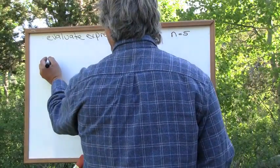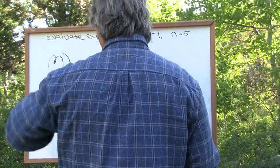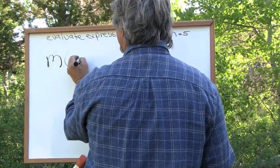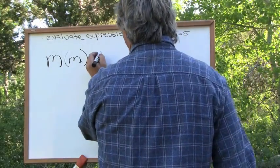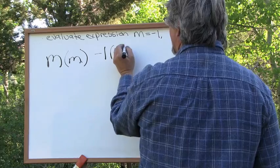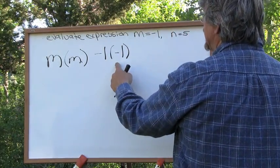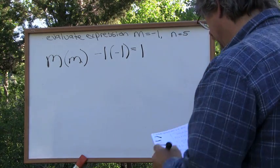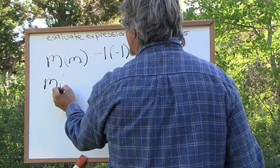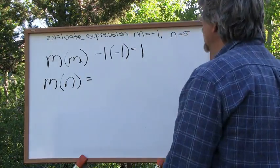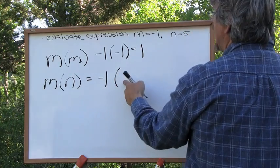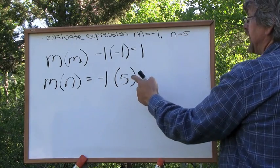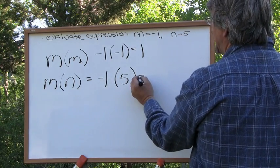We're given an expression m times m. M is negative 1, so this is negative 1 times negative 1. A negative times a negative is a positive, so negative 1 times negative 1 is simply positive 1. What if we're given an expression m times n times n times n times n times n? N is 5 here — we're given the value. Negative 1 times negative 1 times negative 1 is negative 1.